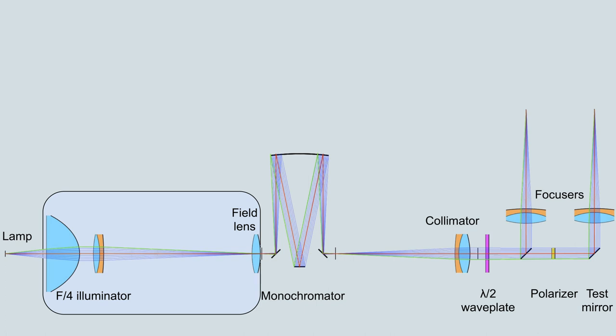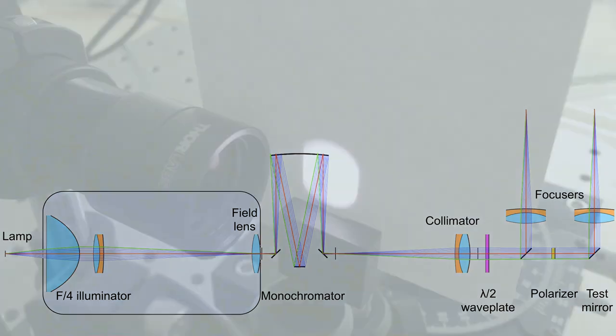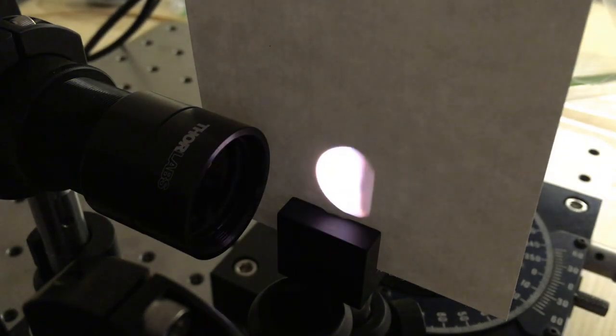The condensing lens collimates the light, which is then focused onto the slit. A field lens placed immediately before the slit is included to collect off-axis rays arising from the filament's finite size. It images the focusing lens onto the collimating mirror of the monochromator. Here you can see how the image changes with and without the field lens.